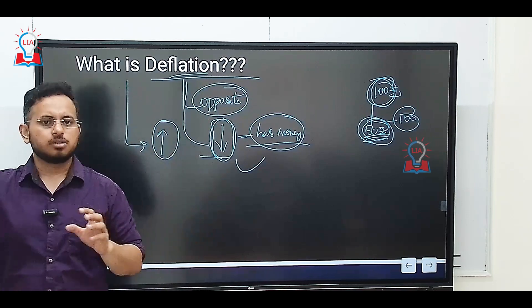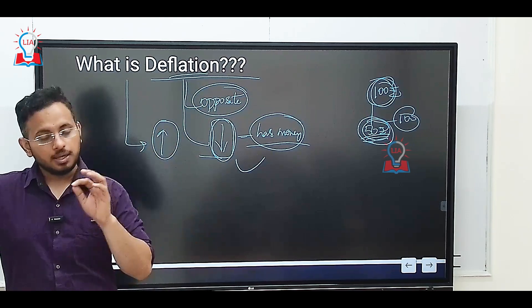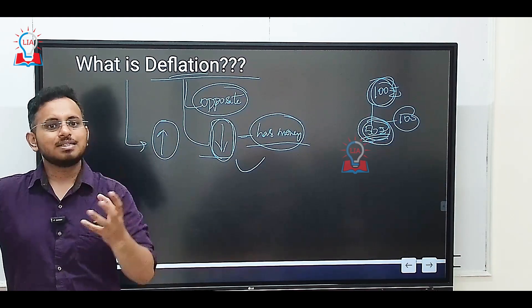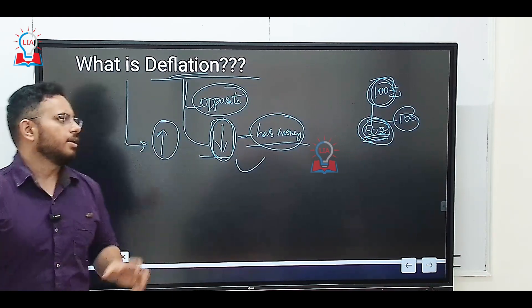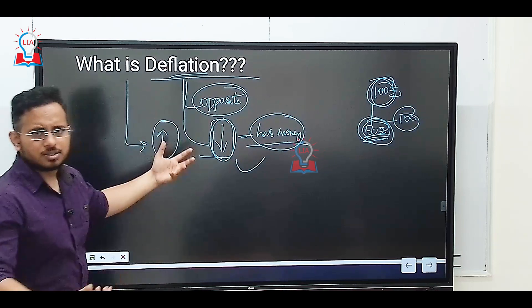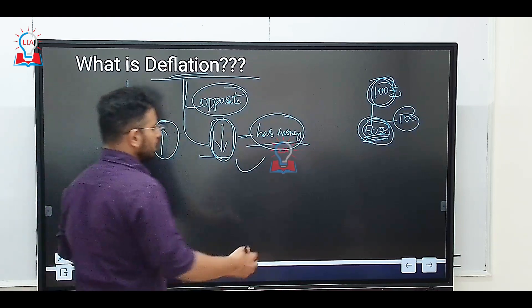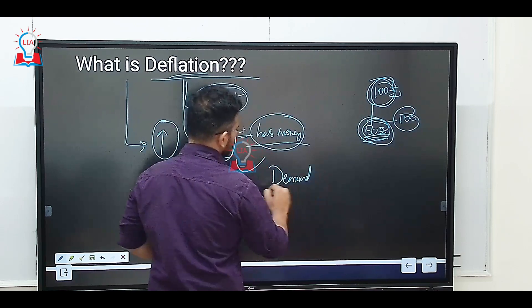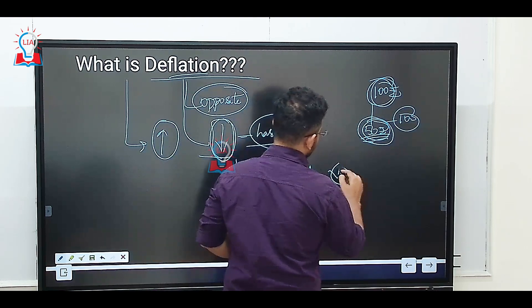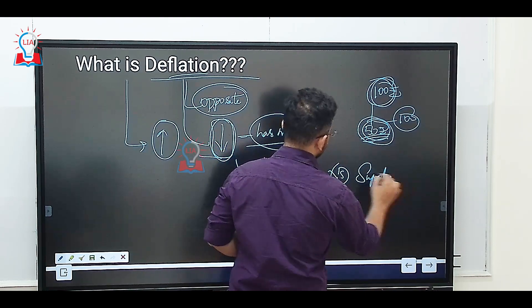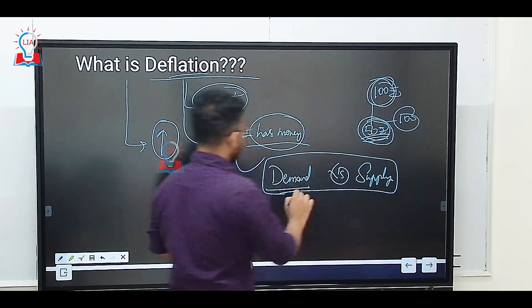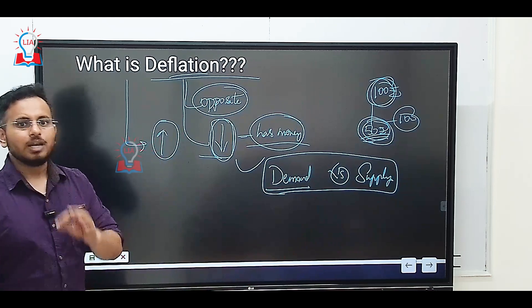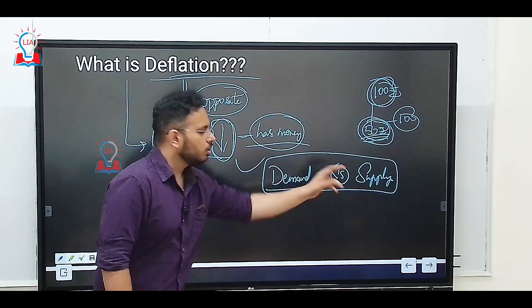One thing that we can understand from this discussion is that in the Chinese economy, the prices of the goods and services are consistently reducing. This reduction in the prices with respect to inflation will depend upon two things: one is called the demand and the other one is the supply.